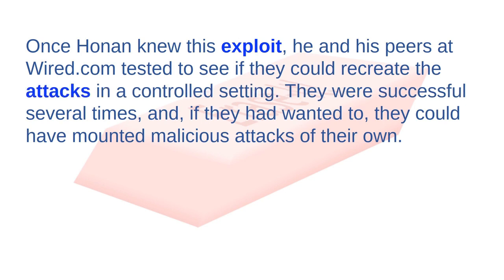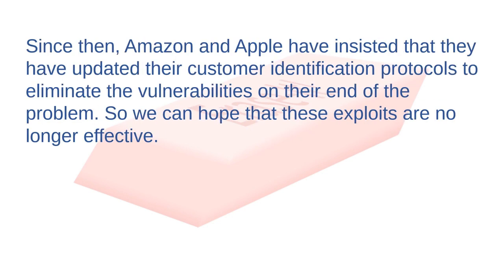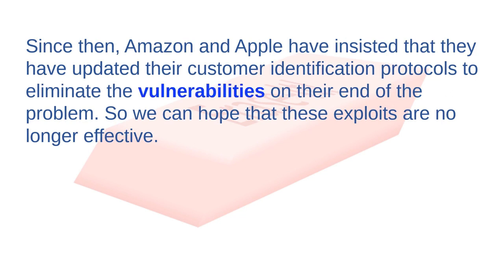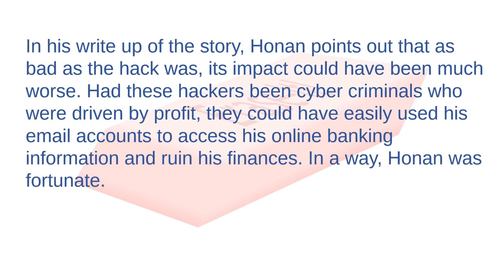Once Honan knew this exploit, he and his peers at wired.com tested whether they could recreate the attacks in a controlled setting — they were successful several times. Since then, Amazon and Apple have insisted that they've updated their customer identification protocols to eliminate the vulnerabilities on their end, so we can hope these exploits are no longer effective.